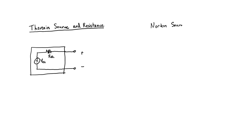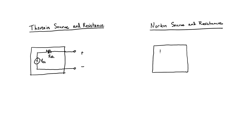Norton's theorem says something very similar. It says that any combination of linear circuit elements can be represented by a Norton equivalent current source and a Norton equivalent resistance. It's the current version of a Thevenin equivalent source and resistance.